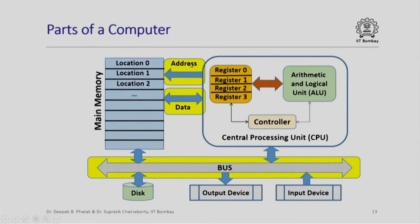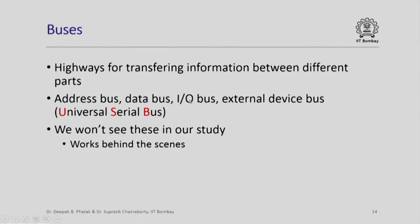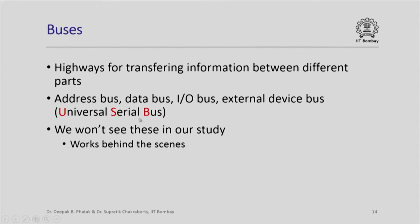Finally, the buses: there is an address bus, a data bus, and a bus on which disk and input output devices are connected. Buses are the highways for transferring information between different parts of a computer — in the Dumbo model Dumbo transferred information using carts; in a real computer buses serve that purpose. We can have different kinds of buses: address buses for specifying memory locations, data buses for shipping data between memory and the CPU, and IO buses for transferring information between IO devices and the computer. For example, USB — the Universal Serial Bus — is a familiar example. As we write programs we are not explicitly going to see buses; they work behind the scenes.